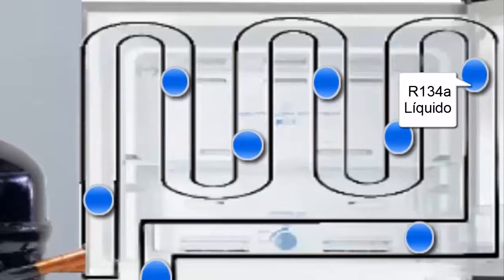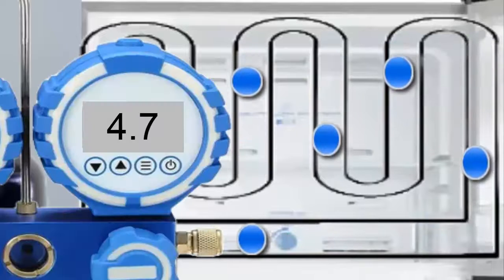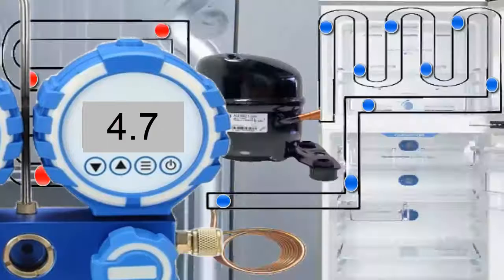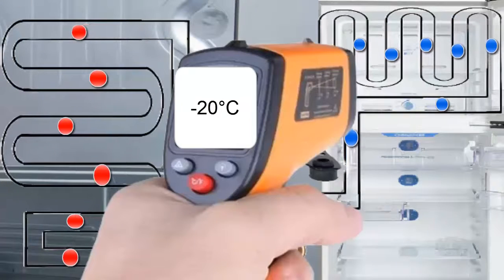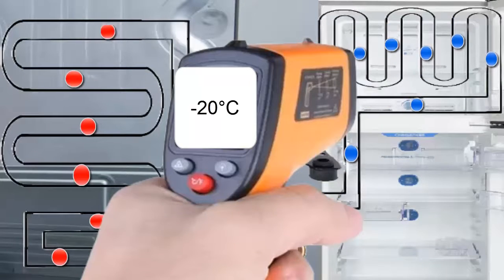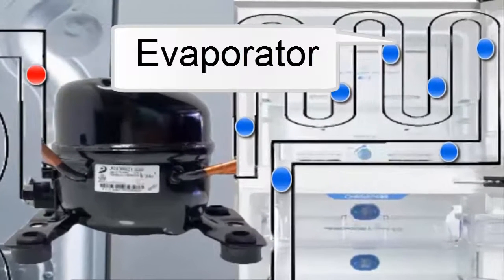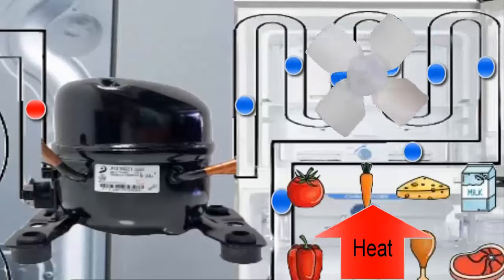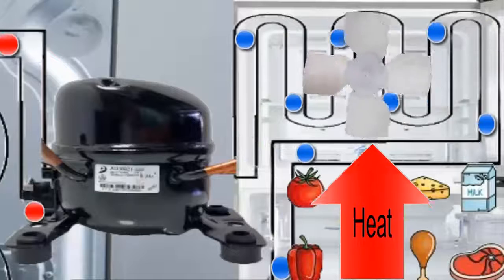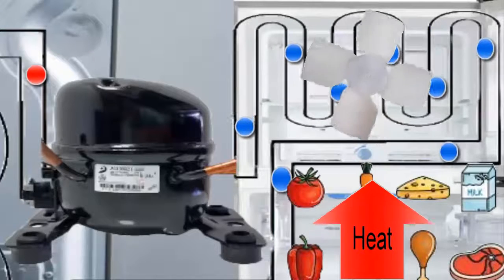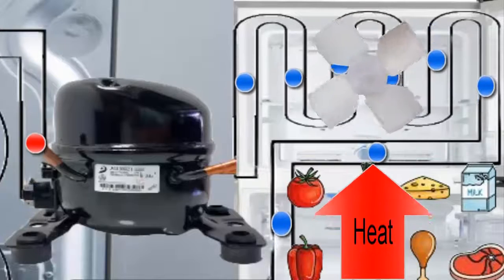The R134A refrigerant enters the evaporator in a liquid state at a pressure of 4.7 pounds per square inch. With this pressure, it is achieved that the R134A in the evaporator has a temperature of minus 20 degrees Celsius. With this low temperature and with the help of the fan, the heat from the food quickly passes to the R134A refrigerant, causing it to evaporate.